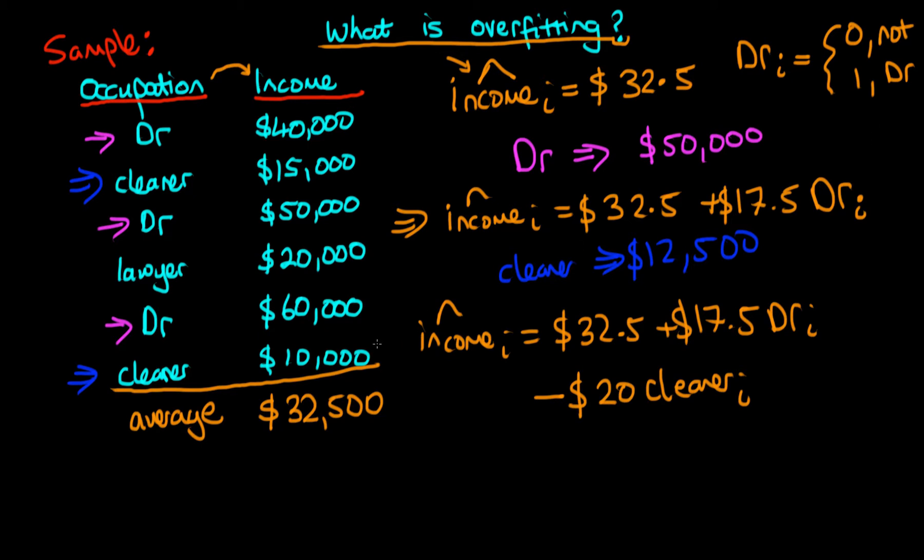This model is slightly more complicated. We've included one more term which is to do with whether or not an individual is a cleaner versus our previous model, and that in turn is more complicated than the simplest possible model which just says all individuals have the same income. But we think that this second model is probably a pretty reasonable model based on our data. We've got two cleaners, we've got three doctors, so we're fairly confident in the inferences we're making or the predictions that we're making.